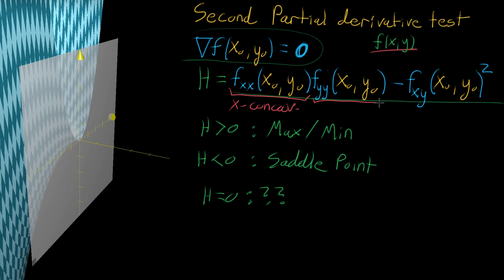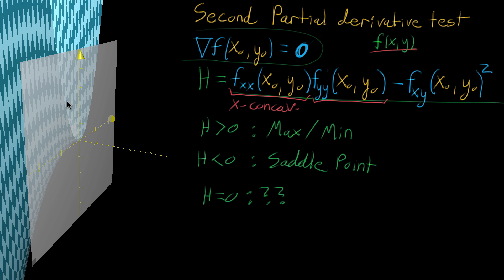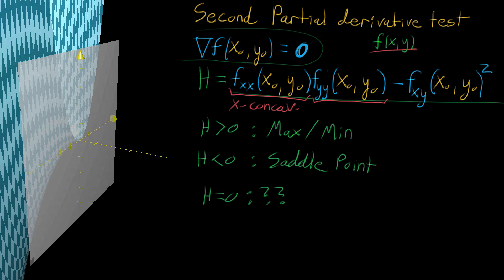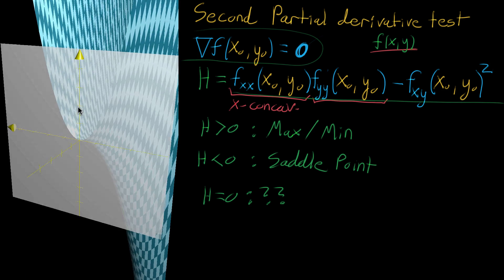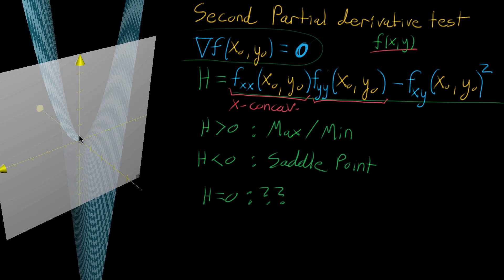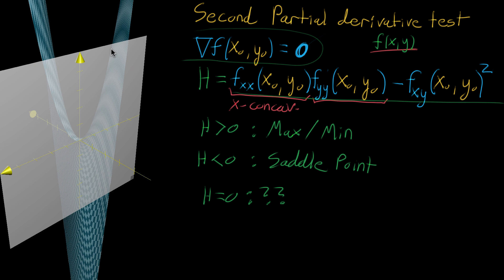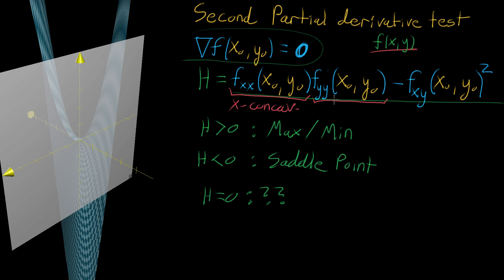Symmetrically, when you take the partial derivative with respect to y twice in a row, you're ignoring x as a variable and looking purely at what movement in the y direction looks like. On the graph pictured here, that also gives a positive concavity parabola shape. So that term tells you the y-concavity.